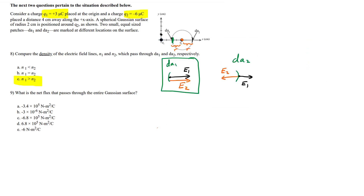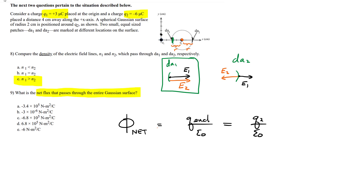Problem two says: what is the net flux that passes through the entire Gaussian surface — that dashed line? You have to remember what Gauss's law means. The net flux is Q enclosed divided by epsilon zero — that's the definition. The charge enclosed in that dashed line is only Q2, so it's Q2 divided by epsilon zero. Q2 is minus six times 10 to the minus six coulombs divided by epsilon zero, 8.85 times 10 to the minus 12. You put that in the calculator and you'll get a negative number.